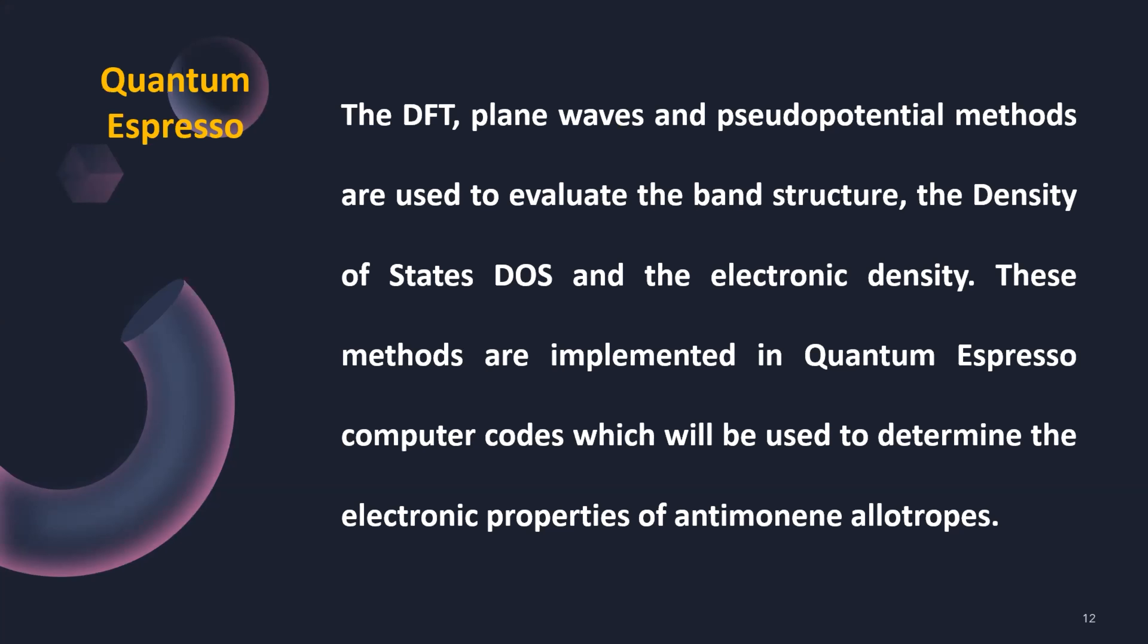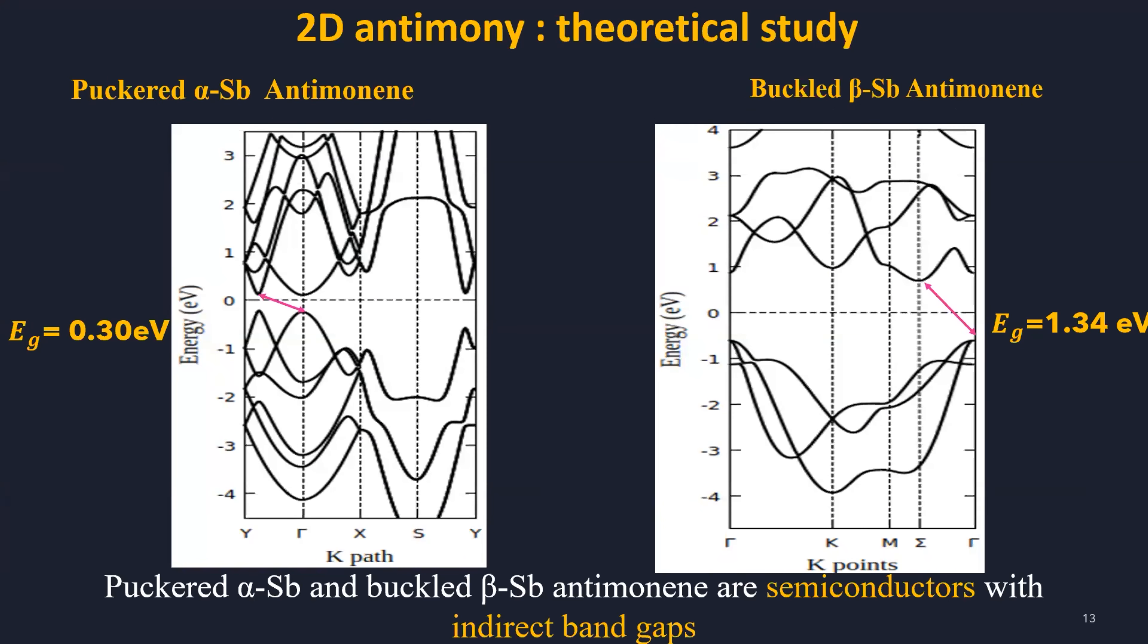The different electronic structure is determined for several antimony allotropes. We see here the band structure of alpha antimony and of beta antimony. The two materials are semiconducting and direct band gap semiconducting materials.